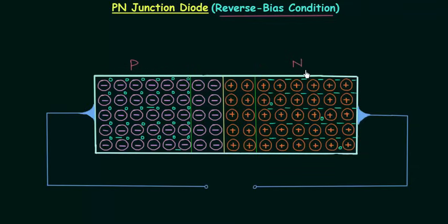If you remember from the last presentation, in forward bias condition the p-side was connected to the positive terminal and the n-side was connected to the negative terminal. So in reverse bias condition we are doing the opposite of what we did under the forward bias condition.